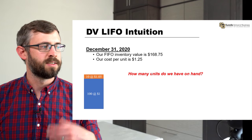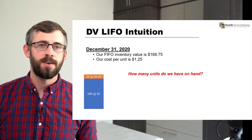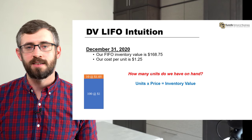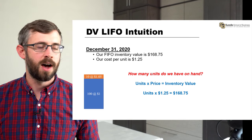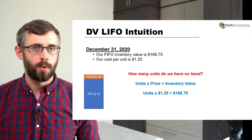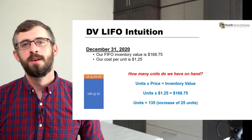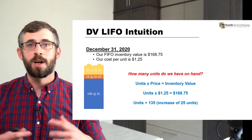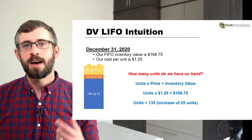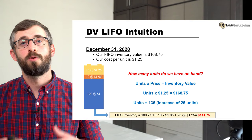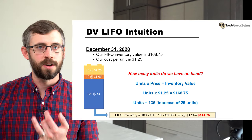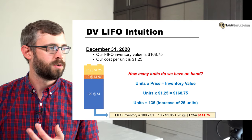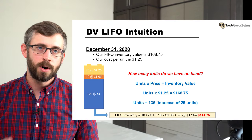Going into our final year, prices have gone up again to $1.25 per unit, and our FIFO inventory value is $168.75. Going through the same process: number of units times $1.25 equals $168.75, so we have 135 units total — an increase of 25 units from the prior year. We've built up a new LIFO layer, this yellow layer of 25 units at $1.25 per unit. Our total LIFO inventory value is the blue inventory at $1 per unit, the orange 10 units at $1.05 per unit, and the new yellow layer of 25 units at $1.25 per unit — a total LIFO value of $141.75.